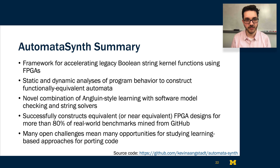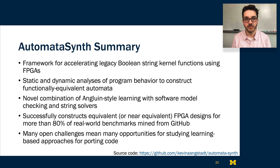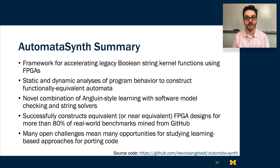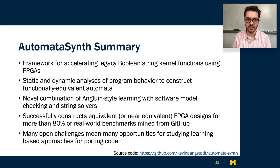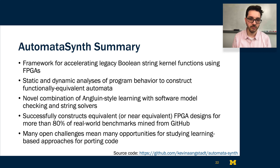In conclusion, AutomataSynth is a framework for accelerating legacy boolean string kernel functions using FPGAs. We do this by applying static and dynamic analyses to program behavior to construct functionally equivalent finite automata. We use a novel combination of Angluin-style learning with software model checking and string solvers to successfully construct equivalent or near-equivalent FPGA designs for more than 80% of the real-world benchmarks we mine from GitHub. There are many open challenges in this area, which means many opportunities for studying learning-based approaches for porting code. The source code for AutomataSynth is available on GitHub, and I encourage you to take a look and perhaps try it out yourself. Thank you for watching.